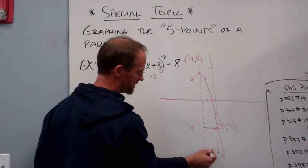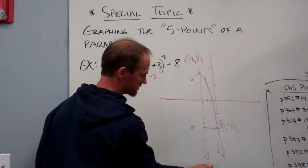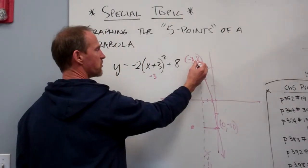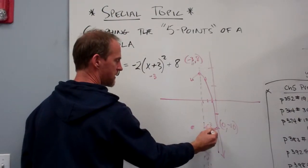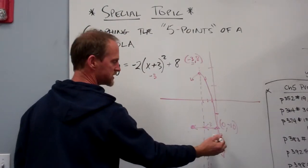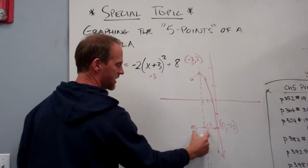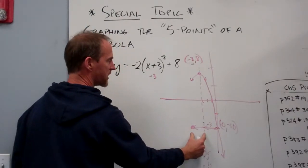The axis of symmetry is right here, x equals minus 3. It's always this coordinate. So if that's going 3 this way, I'm just going to go 3 more that way. It's this symmetric line. We'll flip that over to right here.